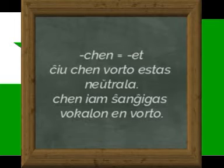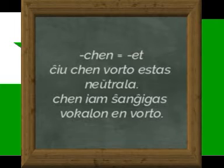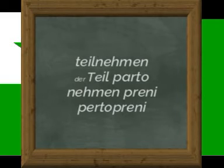But when we have the -hien suffix, we use the -et. The a in this word, and the others, we will use e with the vowels.